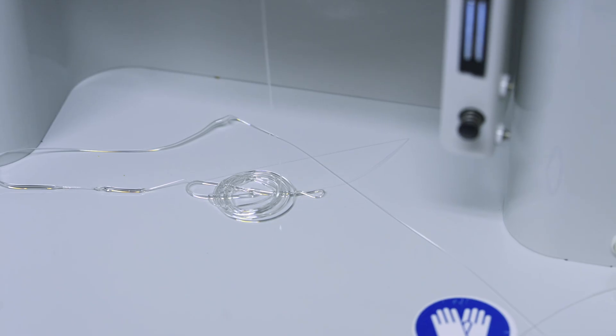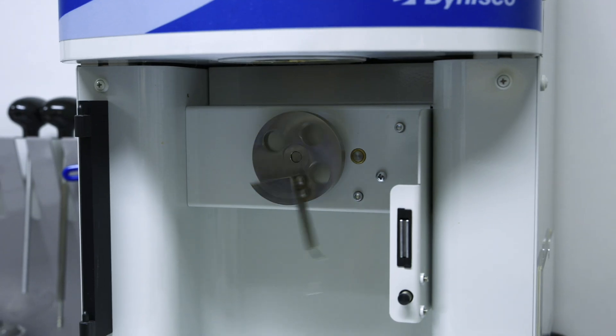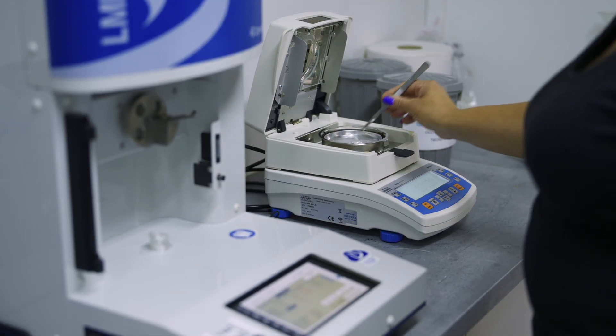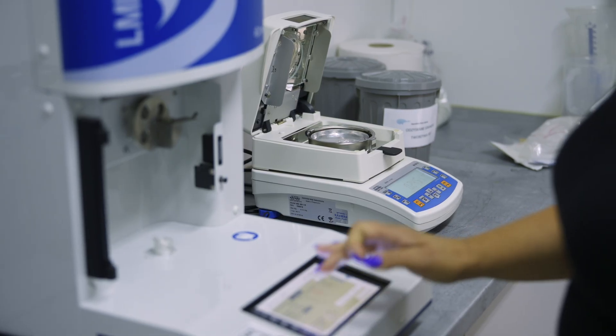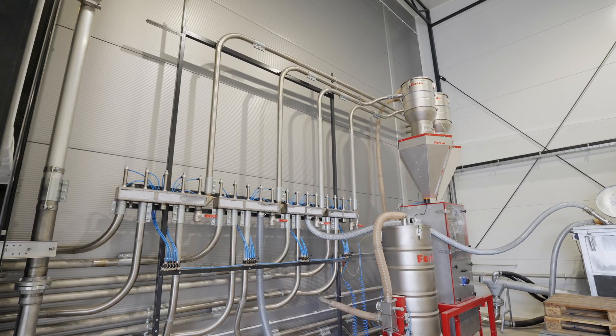30% of the granulate supplied to the plant comes from recycling. Now we can see how raw material is drawn from the silo in the automated process.